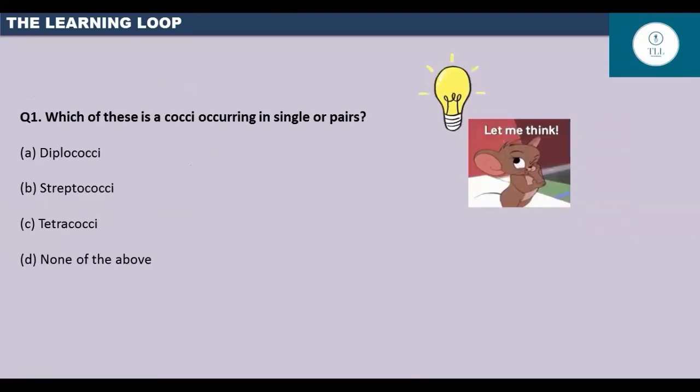Here are some questions from this topic. Comment down the answers in the comment section and I will post all the answers in the next video. So the first question is, which of these is a cocci occurring in single or pairs? Option A, diplococcus. Option B, streptococcus. Option C, tetracocci. Option D, none of the above.